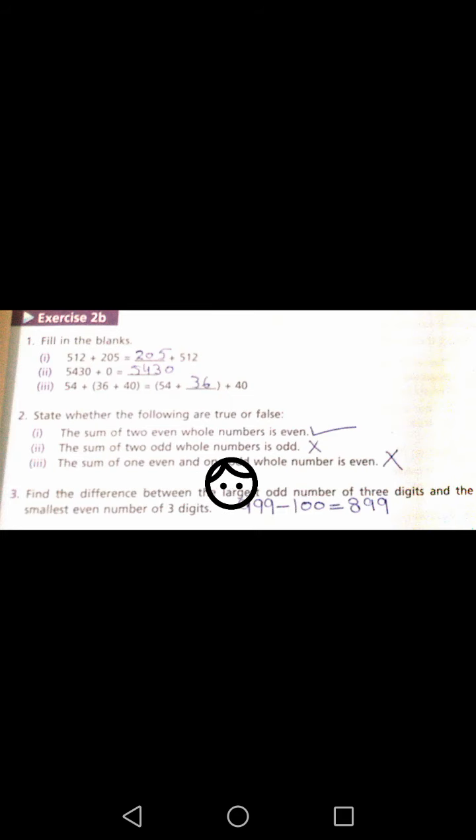Number 2. The sum of 2 odd whole numbers is odd. If you have 2 odd numbers given, for example, 3 plus 3, its answer is 6 which is even.